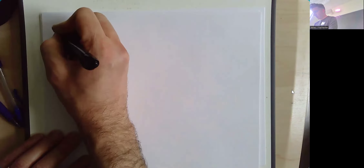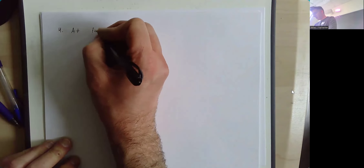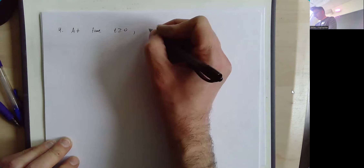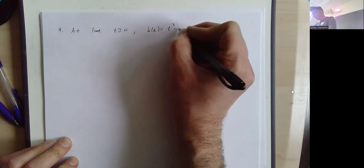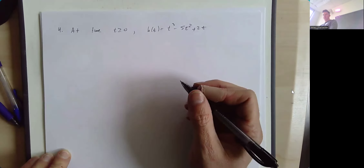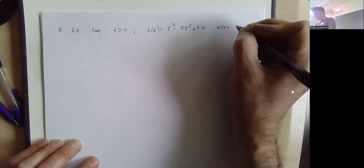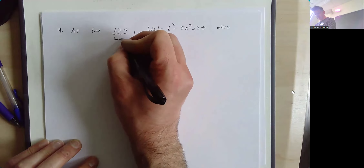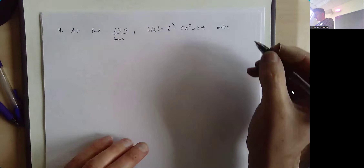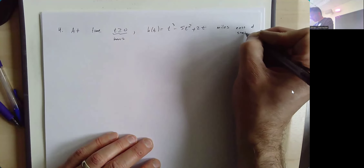Okay, number four. At time T greater than or equal to zero, H of T equals T cubed minus 5T squared plus 2T gives the position of a car in miles, where T is measured in hours. When H of T is negative, the car is that many miles west of its starting point. H of 1 is one minus five plus two, which is negative two — so the car is 2 miles west of the start.